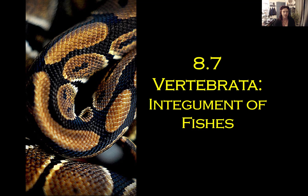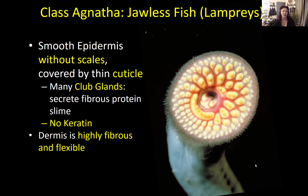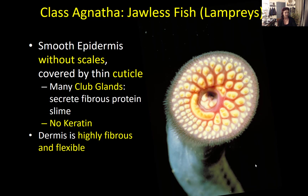Now we'll start an overview of the integument found in different groups of vertebrates, starting with the oldest in evolutionary terms: fish. The first fish group is superclass Agnatha — the jawless fish — which includes class Mixini and class Cephalaspidomorphi. These exhibit the ancestral state for the integument in vertebrates. They have a smooth epidermis with no scales, covered by a very thin waxy cuticle made of fats, not keratin — in fact there's no keratin in this group, meaning keratin evolved later. They do have a lot of what are called club glands, which are proteinaceous glands that produce fibrous protein slime.